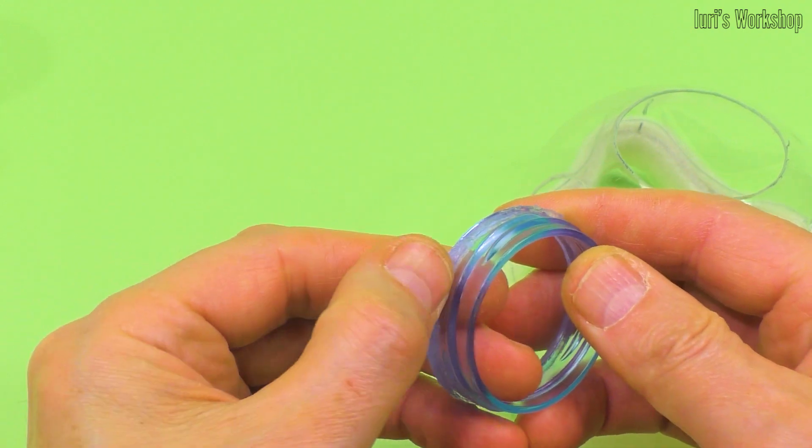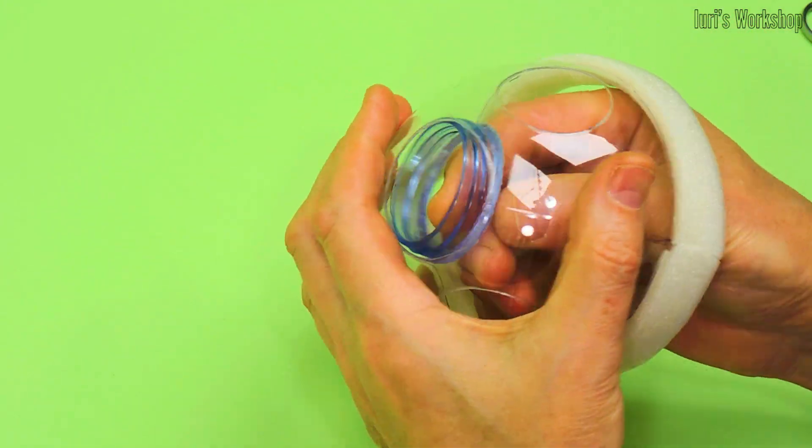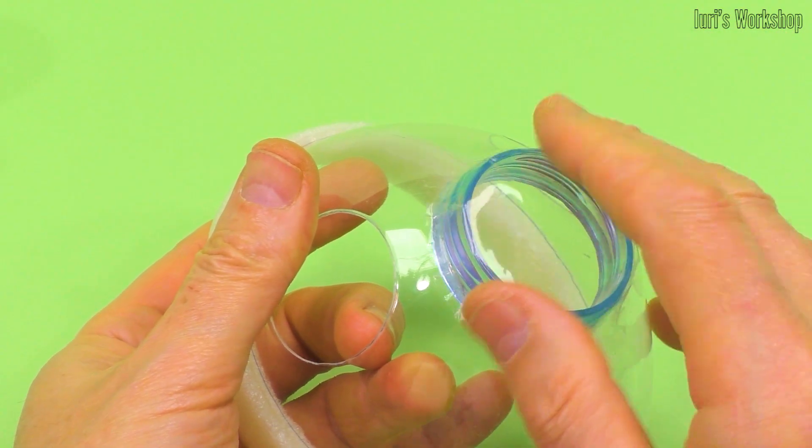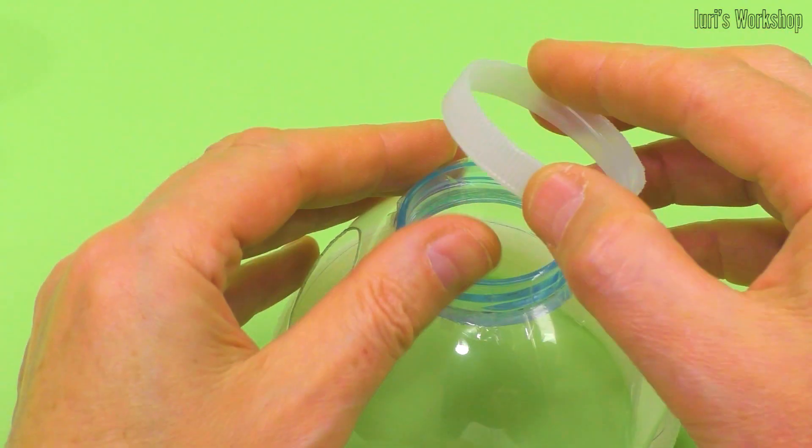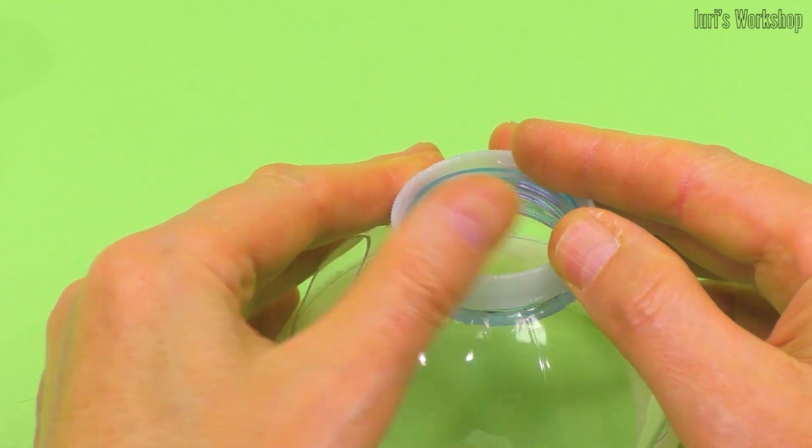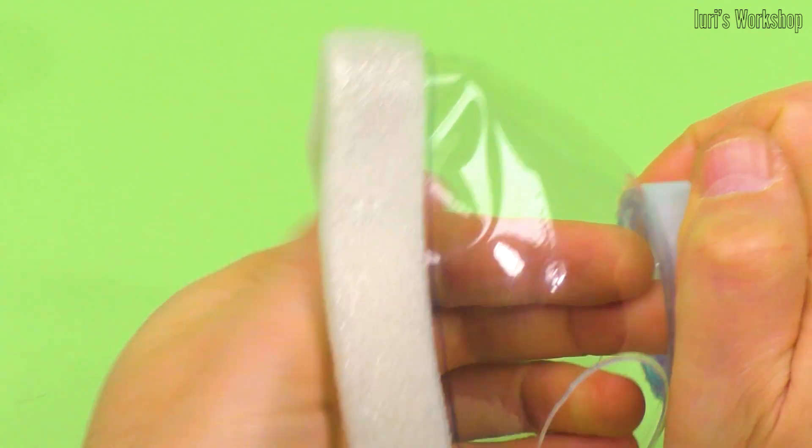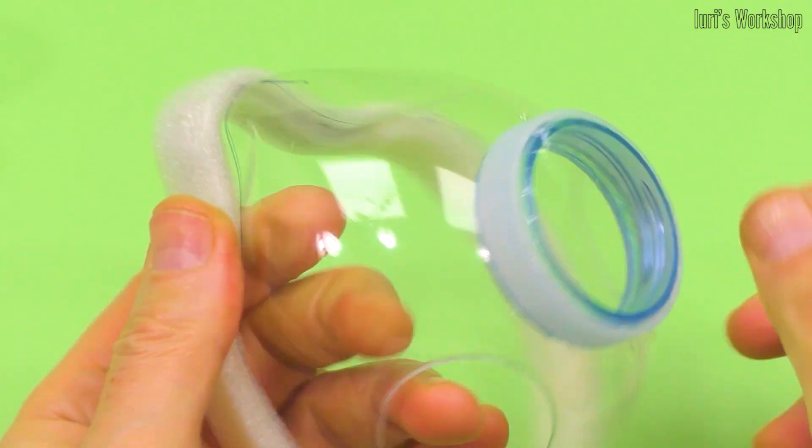I used a silicone sealant to seal the sound membrane mount. It retains its elasticity even after curing. Polypropylene membrane provides high-frequency sound transmission and significantly improves speech intelligibility.